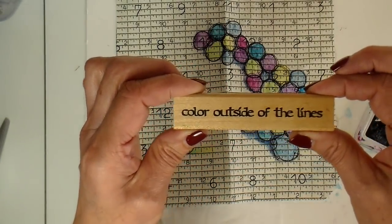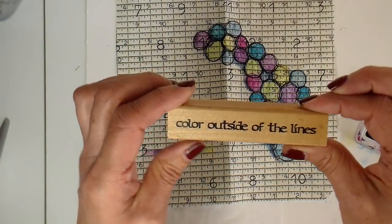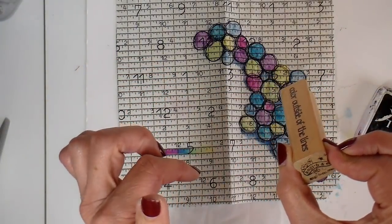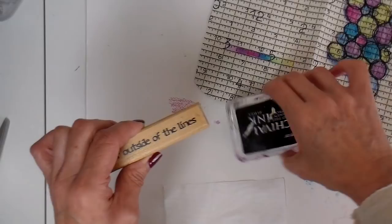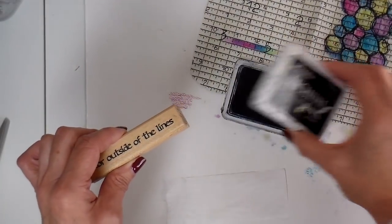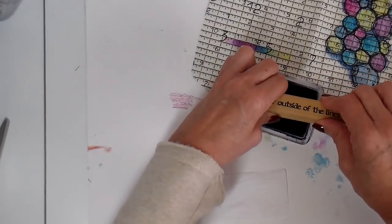My saying is color outside of the lines. This is an old stamp. I'll link it down below if I can still find it. I am using the Ranger archival ink, which is permanent. And we'll be inking this.